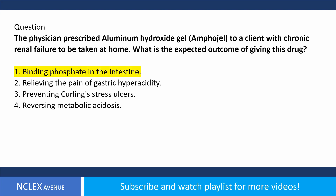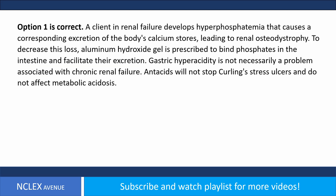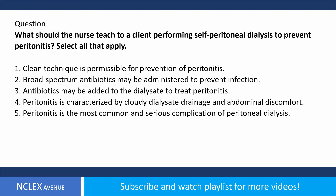Answer: option one is correct. A client in renal failure develops hyperphosphatemia, which causes a corresponding excretion of the body's calcium stores, leading to renal osteodystrophy. To decrease this loss, aluminum hydroxide gel is prescribed to bind phosphates in the intestine and facilitate their excretion. Gastric hyperacidity is not necessarily a problem associated with chronic renal failure. Antacids will not stop Curling's stress ulcers and do not affect metabolic acidosis.